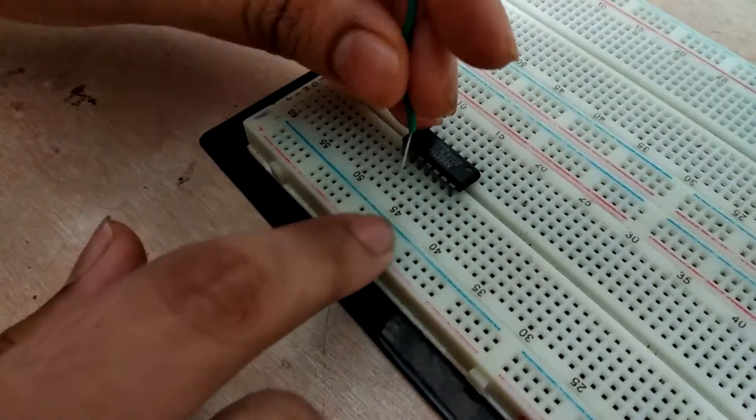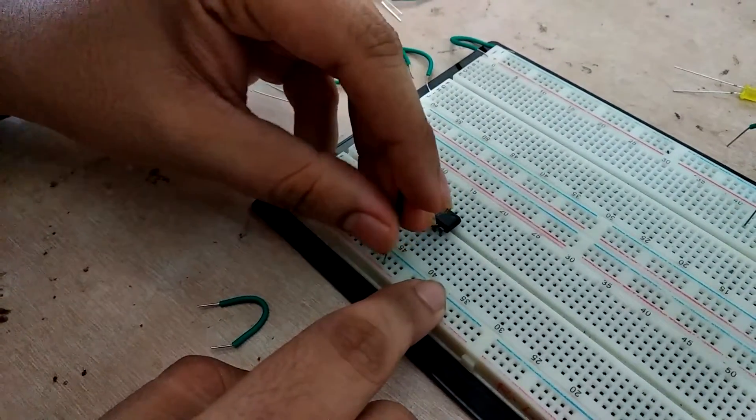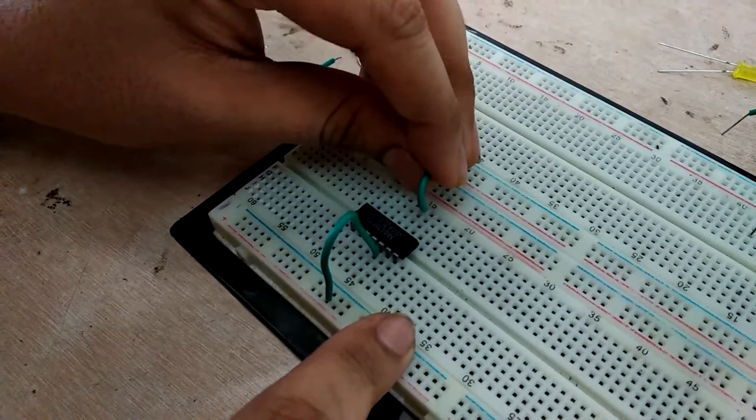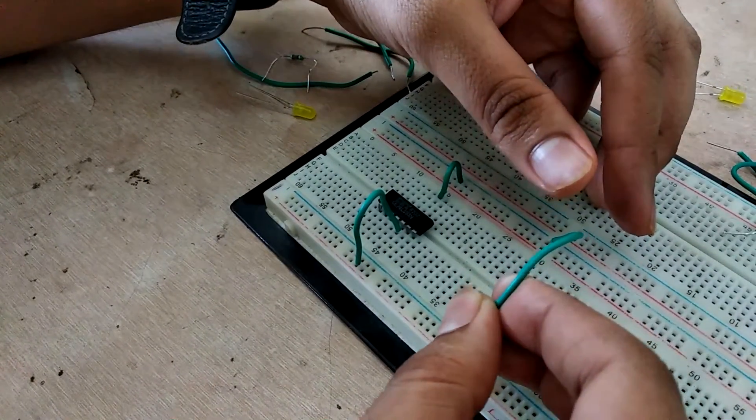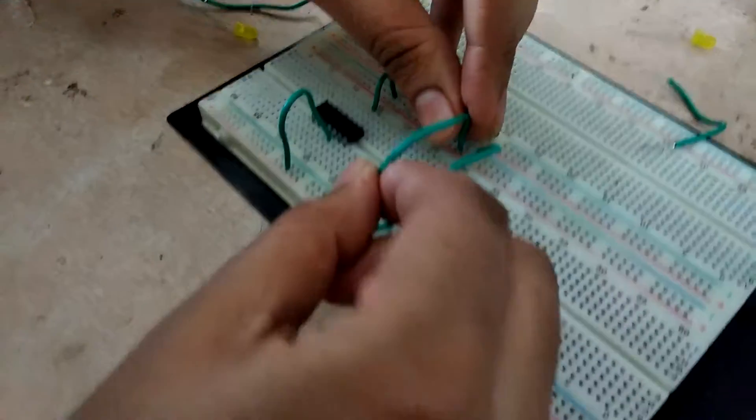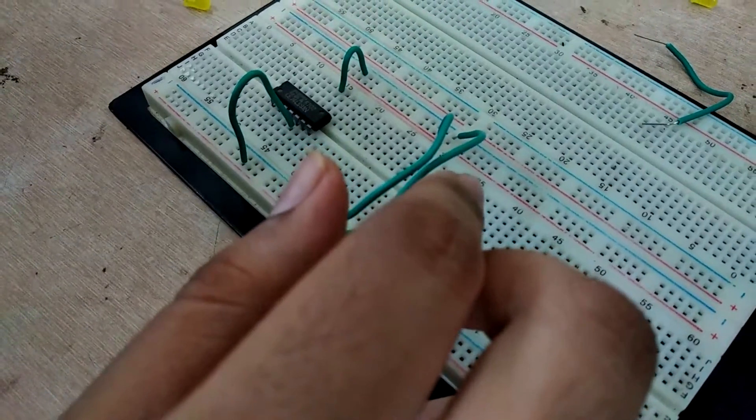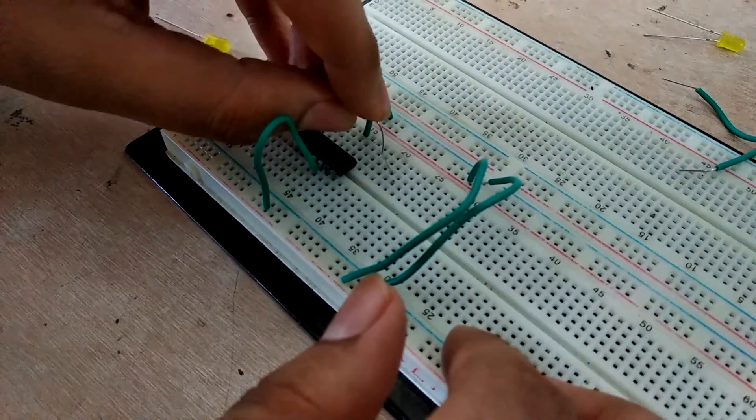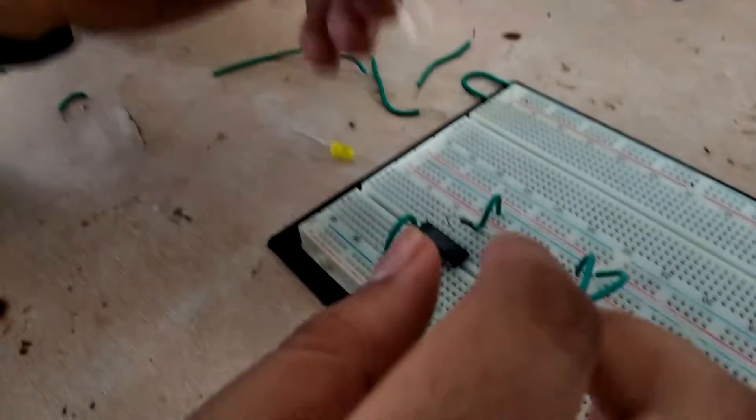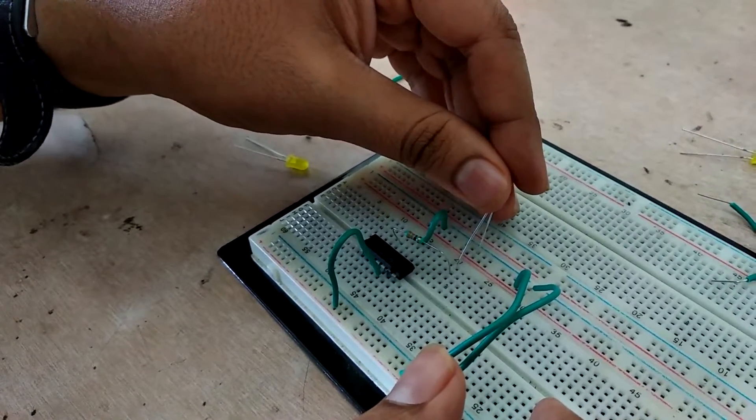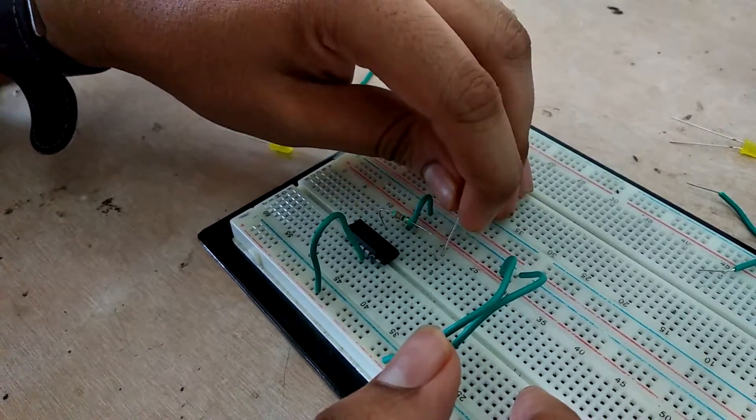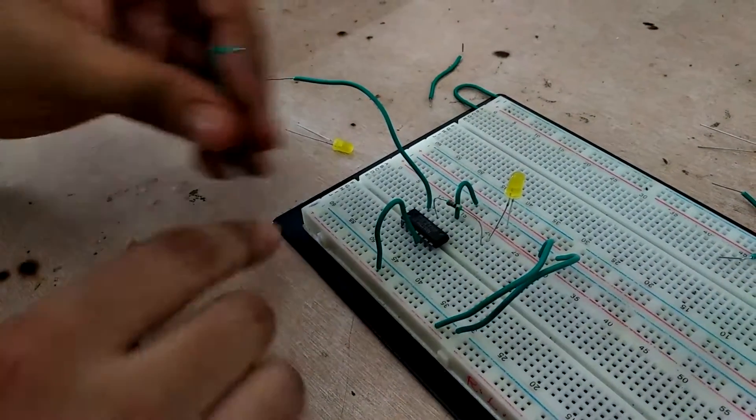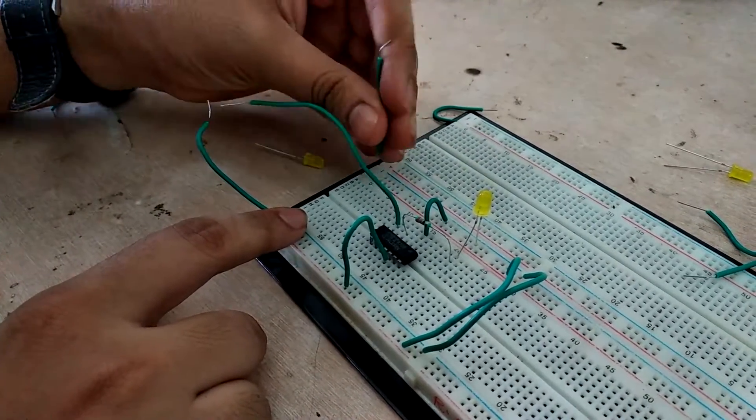So first connect VCC, that's pin number 5. Then connect pin number 10 to ground. Then connect resistor to pin number 12. Next connect clock to pin number 14. And power the IC.